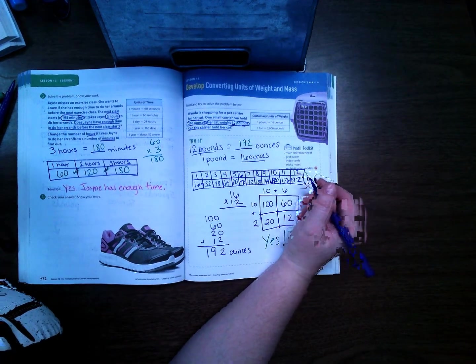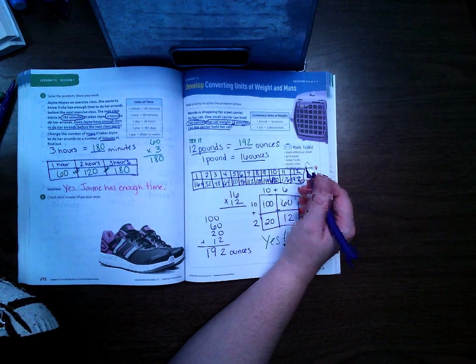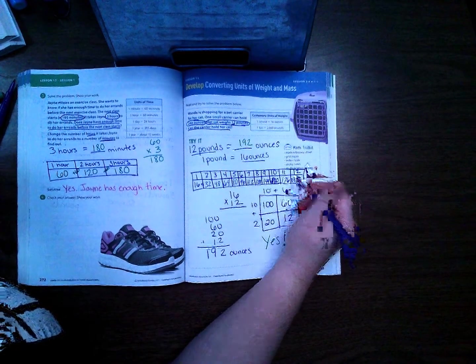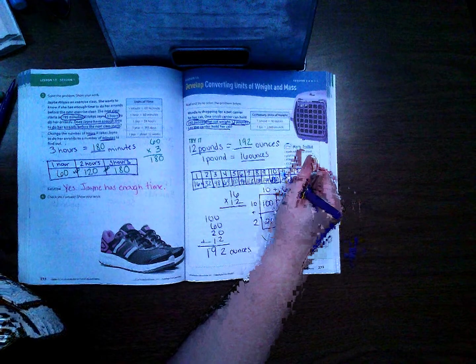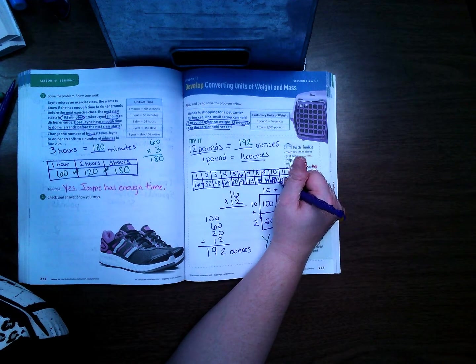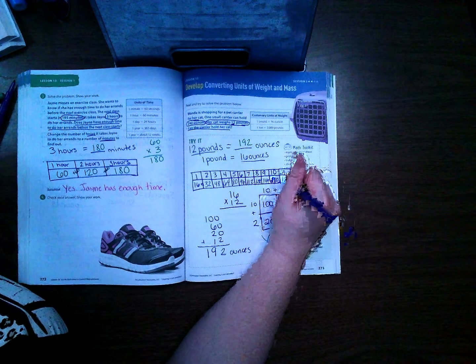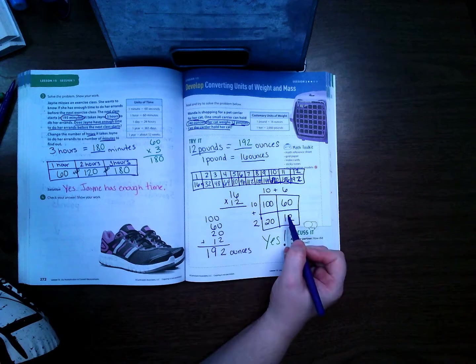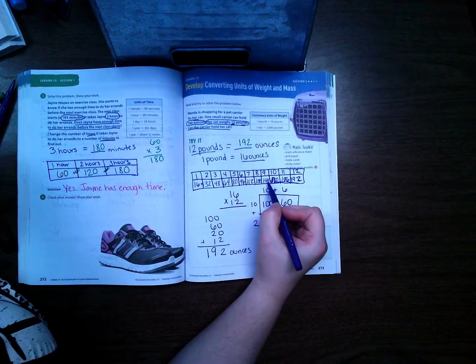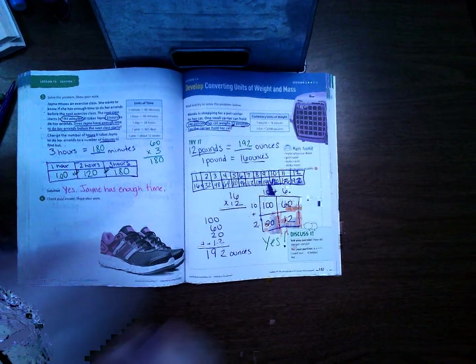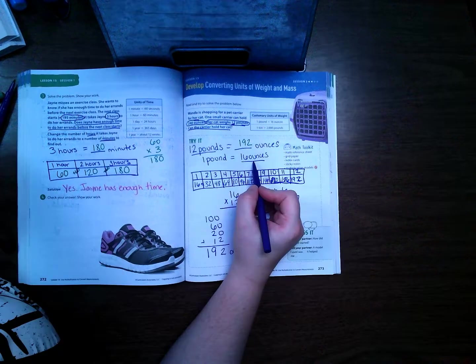I have to really think about that to keep adding those together, and actually I think I even added wrong right here. It's way easier to do a multiplication whenever you're doing this than it is to try to fill out this chart. You would take the number of ounces times the number of pounds and get 192. Let's go ahead and move on to the next page.